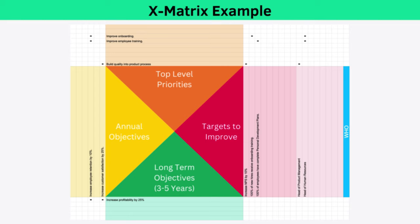Following the dots for our customer satisfaction annual objective, we can see we have an initiative to build quality into the process, a KPI to increase NPS by 10%, and the head of product management is responsible. In this example, Catchball would happen with the head of product management and head of human resources each taking a copy of the X Matrix and working with their teams to create a new X Matrix based only on the initiatives and objectives for which they are responsible. Each time the model goes down a level in the organization, the initiatives become a little more concrete and a little less strategic.